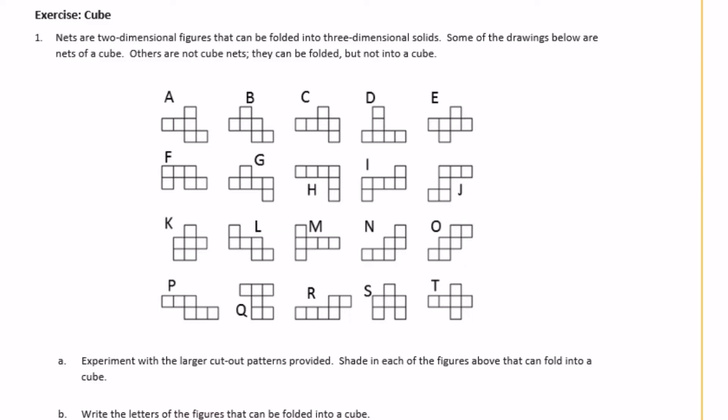So a net is basically just a two-dimensional figure. All of these are nets. Like if we look at A, it's a two-dimensional figure, and then when you fold it along all of those lines, it turns into a three-dimensional figure.